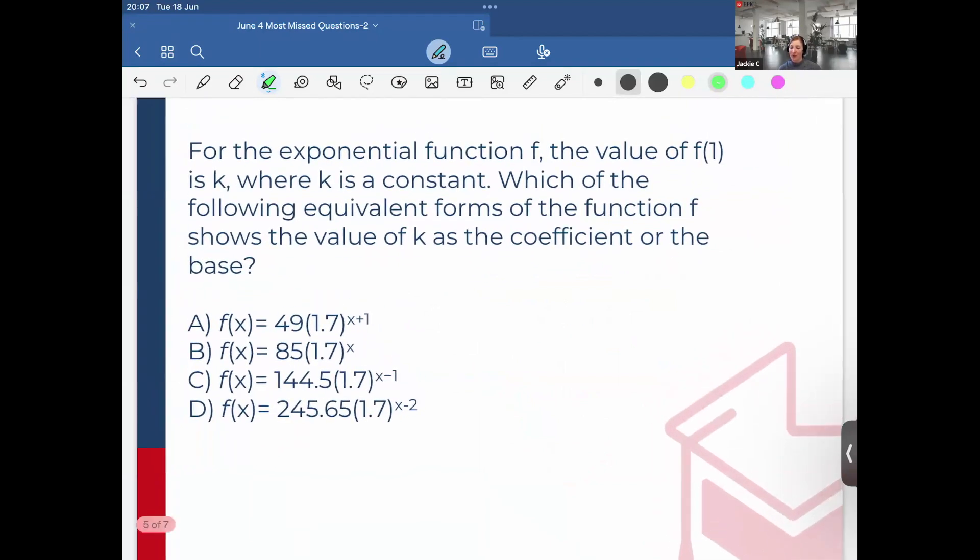So continuing our journey. So this one, for the exponential function f, the value of f(1) is k, where k is constant. Which of the following equivalent forms of the function f shows the value of k as the coefficient or the base? So I think the reason why this one was missed because perhaps the language. So remember the coefficient, the coefficient of all the answer choices here. For example, A it's 49, B it's 85, 144.5, and 245.65.